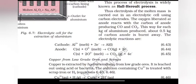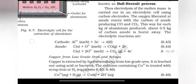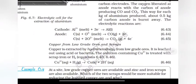This way for each kg of aluminum produced, about 0.5 kg of carbon anode is burned away. The electrolytic reactions are: Al3+ plus 3 electron gives Al. C plus O2- gives CO plus 2 electron. C plus 2O2- gives CO2 plus 4 electron.